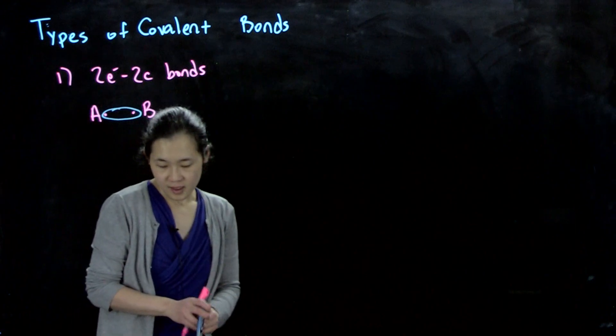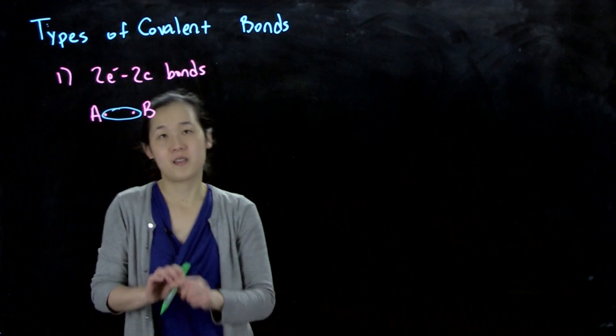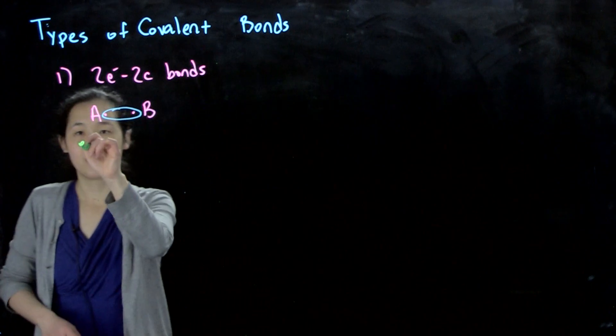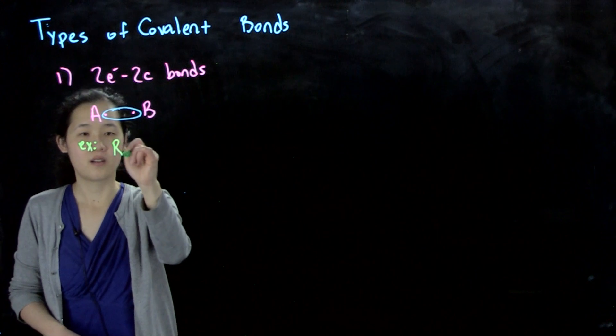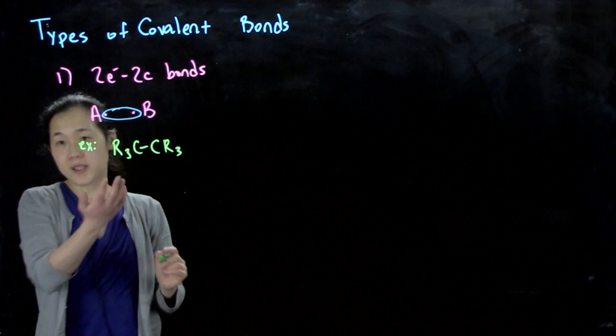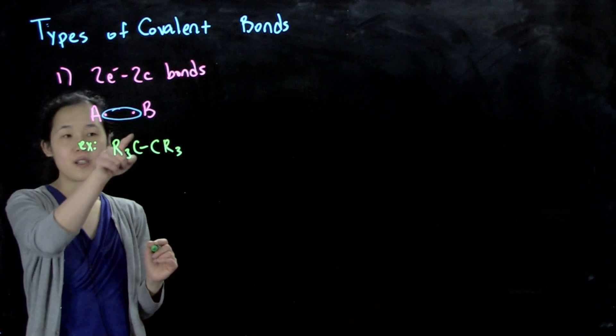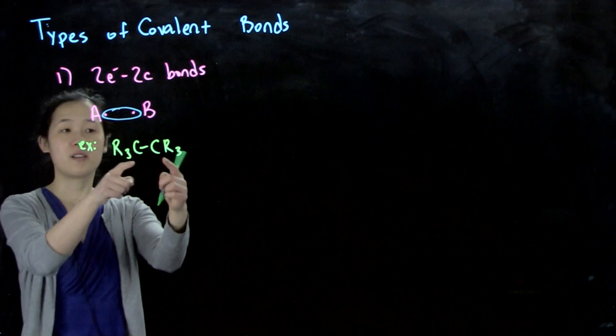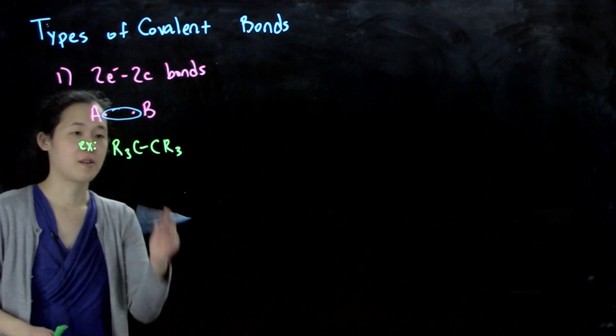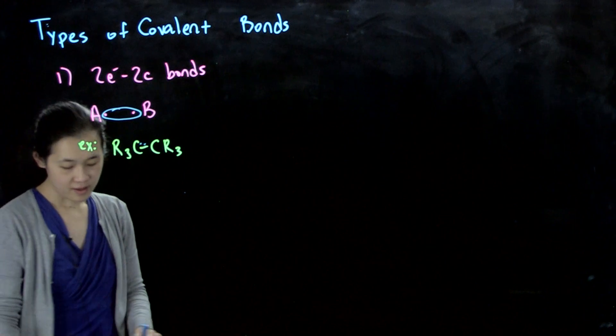The classic example would be alkanes. If you want to count valence electrons, carbon has four valence electrons. There's one sharing or donating one to this bond. So there's one valence electron here, one valence electron here. Together they form that bond.